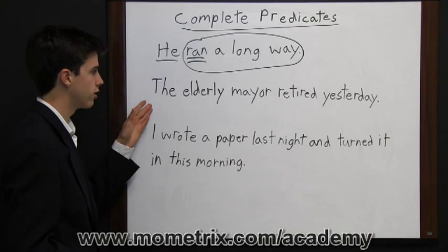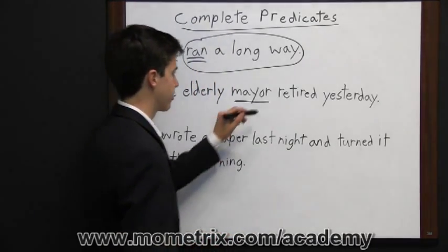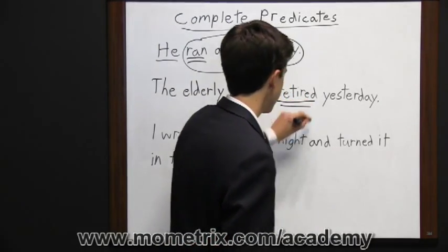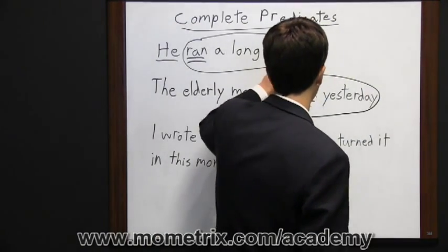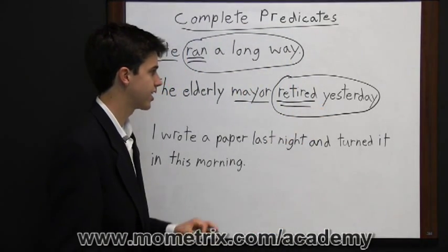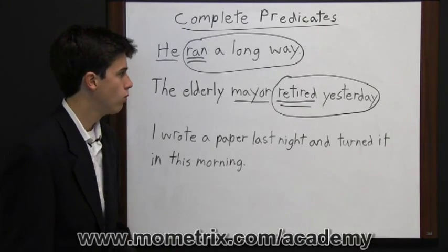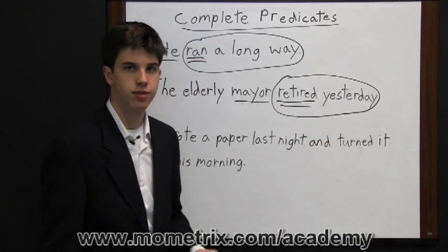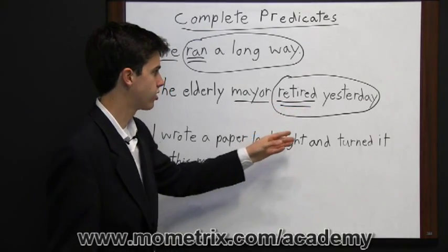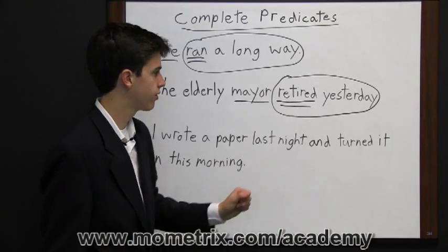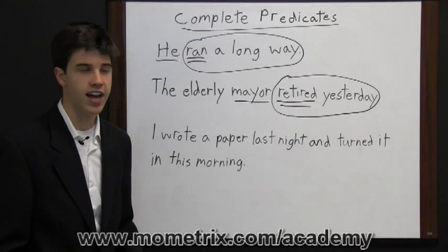The next sentence says 'the elderly mayor retired yesterday.' Mayor is the subject, and 'retired' is the verb. Yesterday is also part of the predicate, so the complete predicate would be 'retired yesterday.' Yesterday is part of the predicate because it's an adverb — a word that modifies the verb — since it tells when the mayor retired. So yesterday further explains the verb 'retired,' which is why 'retired yesterday' is the complete predicate.